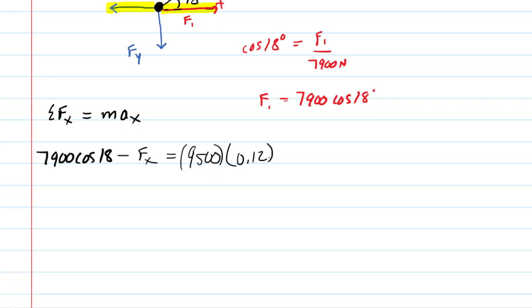And then we're just going to simplify. On the left side, we've got 7,900 cosine of 18, which is 7513.3 approximately, minus Fx. On the right-hand side, we have 9,500 times 0.12, and that's 1140. Now, the rest should be easy to solve. You could subtract the 7513 and then divide both sides by negative 1. And when you do this, you will find that Fx is equal to 6373.3, and that's going to come out in Newtons, of course.